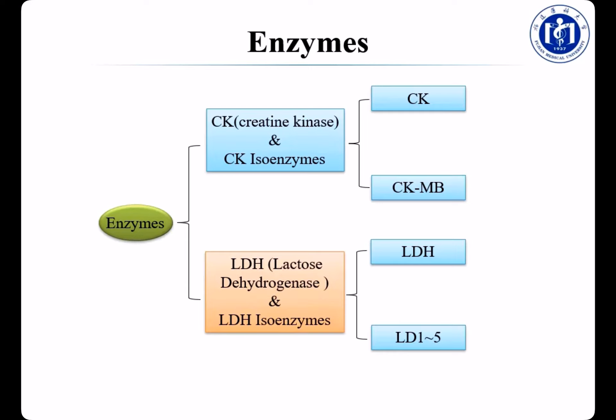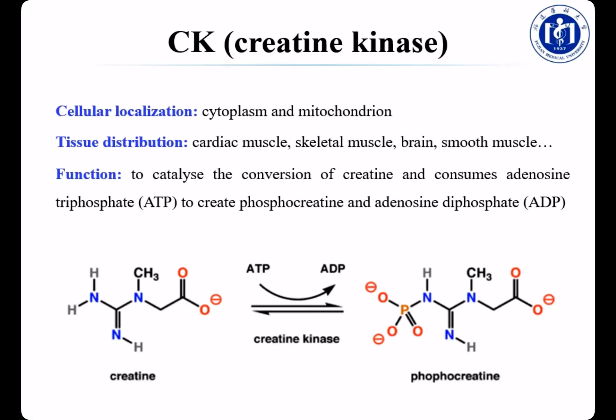According to the definition, serial cardiac markers can be divided into two parts: enzymes and proteins. The enzymes consist of creatine kinase (CK) and its isoenzymes, and lactate dehydrogenase (LDH) and its isoenzymes. CK isoenzymes include CK and CKMB. LDH isoenzymes include LD1 to LD5. Now we will learn these enzymes one by one.